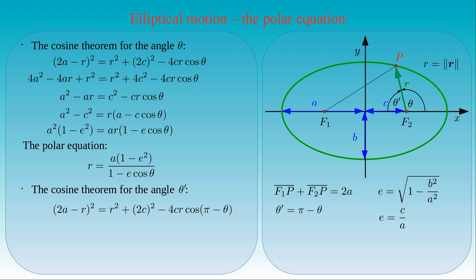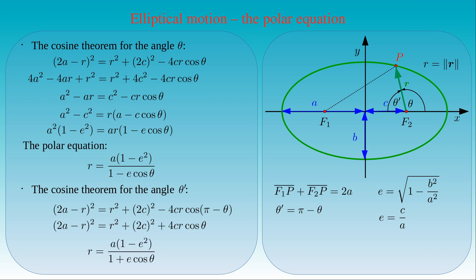Since the cosine of pi minus theta is equal to minus cosine theta, we can substitute it in the last term on the right-hand side. This only changes the sign of the last term, therefore the polar equation can be written in the following form: the distance R is equal to A times 1 minus E squared, divided by 1 plus E times cosine theta.